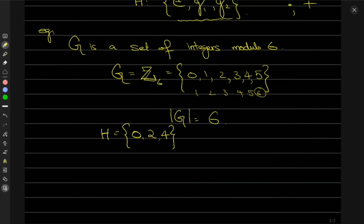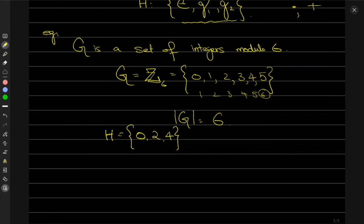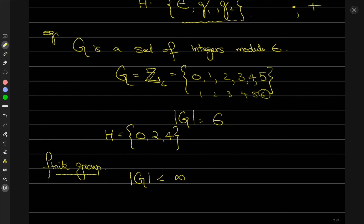Another important thing — and we'll end this video at this topic — is the definition of a finite group. It is simply saying that the group is a finite group if the order of the group is less than infinity. That means if the order of G is finite, then G is a finite group. We can have infinite groups as well — just a side note.